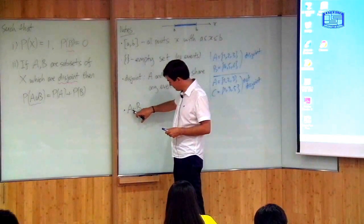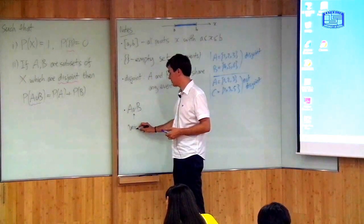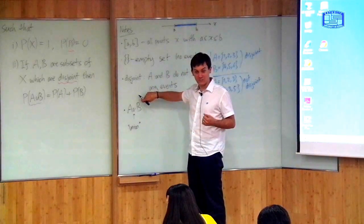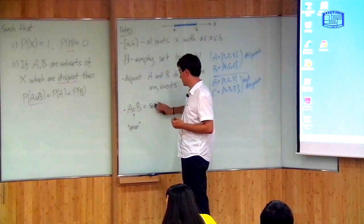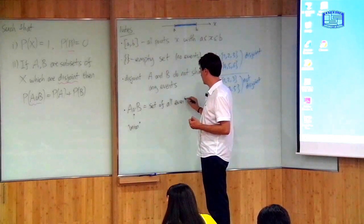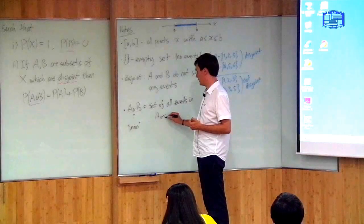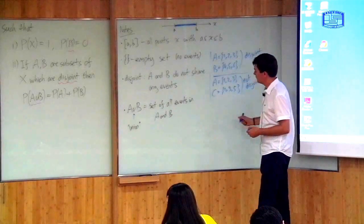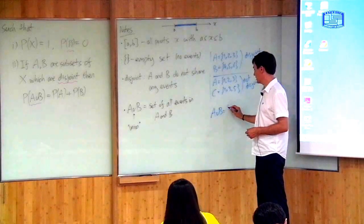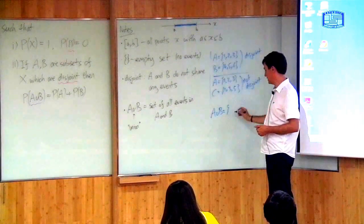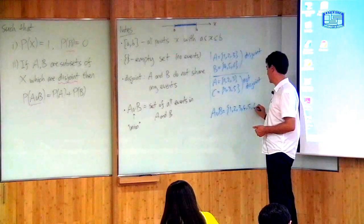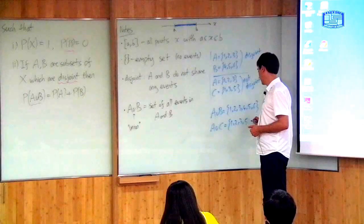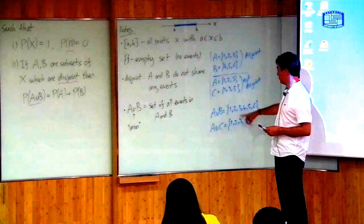Finally, we come to this symbol — A with a U-shape and B — which is called the union. It simply means the set which contains all of those things of A and all of those things of B. Using my example here, if I take A union B, this is all the things in A plus all the things in B, so it's {1, 2, 3, 4, 5, 6}. And A union C, as I've defined them, would be {1, 2, 3, 5} — the set which contains all of the elements of the two sets.